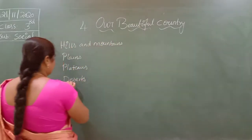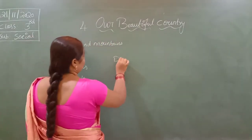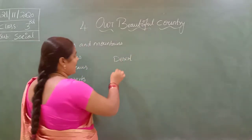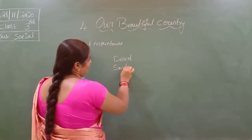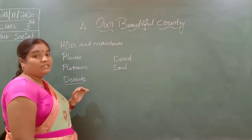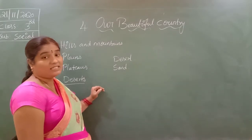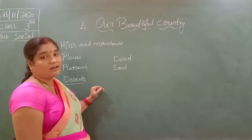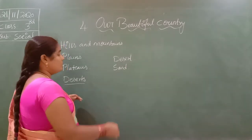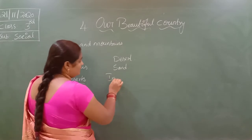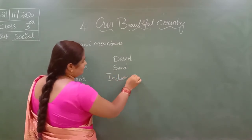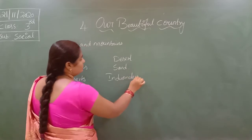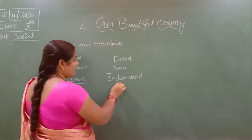The land area is covered by sand. The Indian desert lies in the west direction of our country, and it is also known as the Thar Desert.